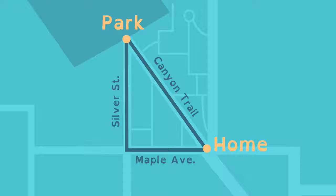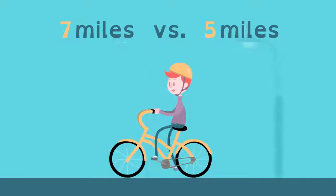She knows the two legs, Maple Avenue and Silver Street, are 3 and 4 miles long. Applying the Pythagorean Theorem, 3 squared plus 4 squared equals 25. She knows that 5 squared is 25, so the hypotenuse, the length of Canyon Trail, is 5 miles. Two miles less of biking for Lucy.